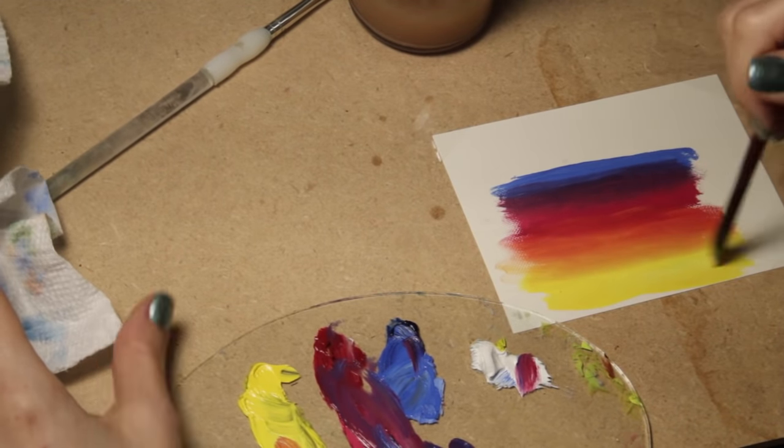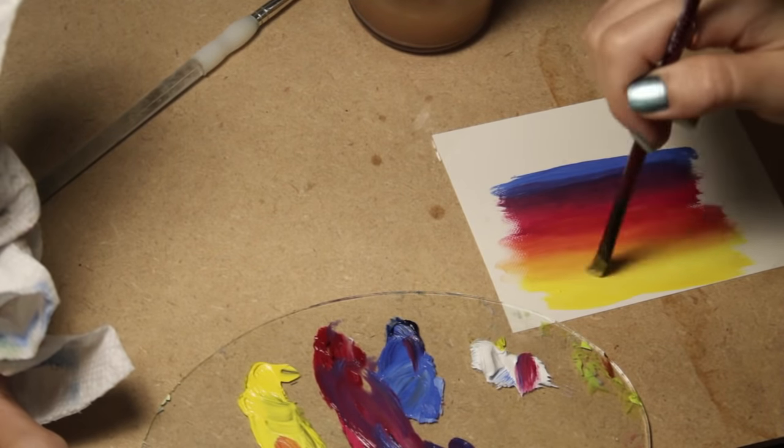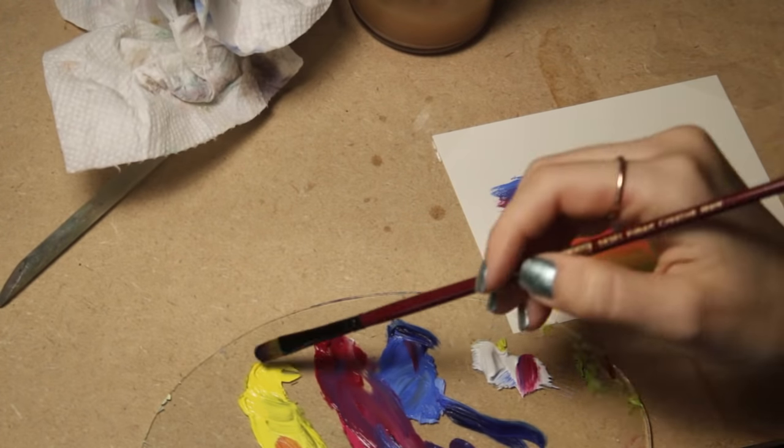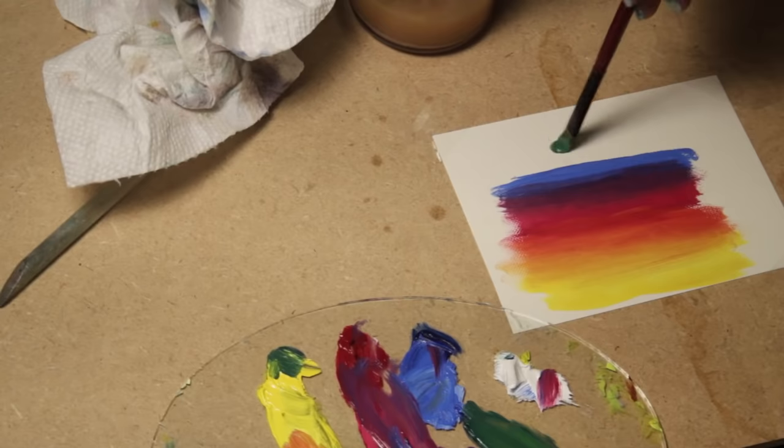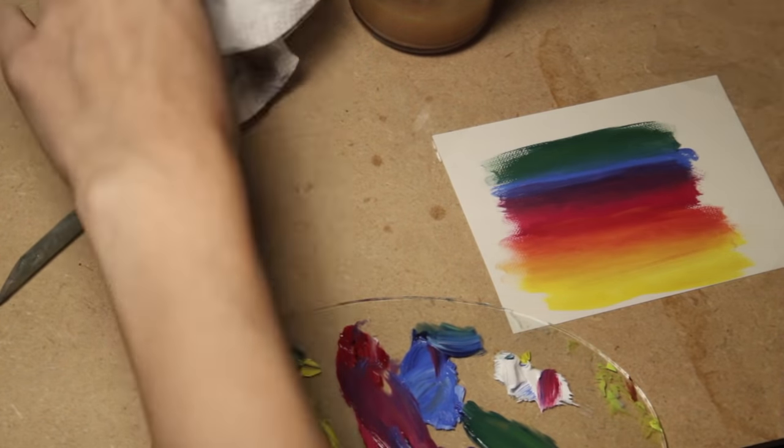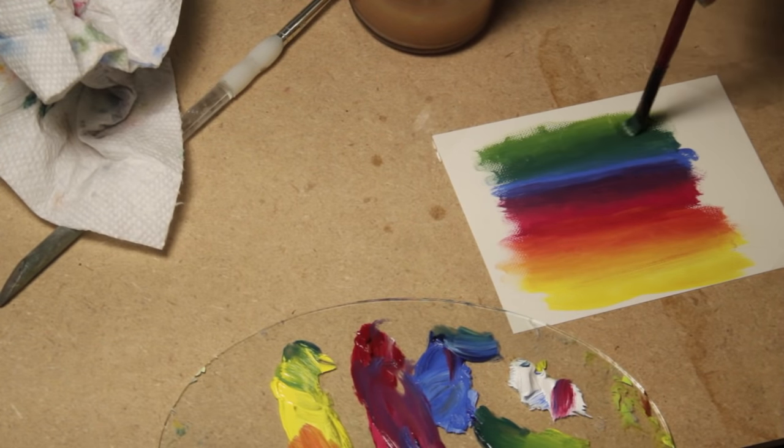I brought in more yellow towards the bottom and just kept building up that gradient. Next it was time to paint the green part, so I added yellow to the blue and gradually kept adding more yellow towards the top to make it more and more green.